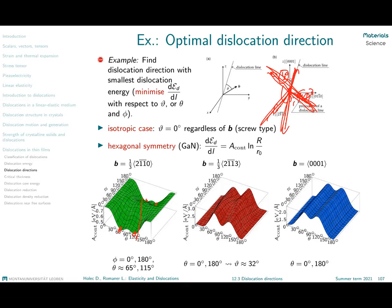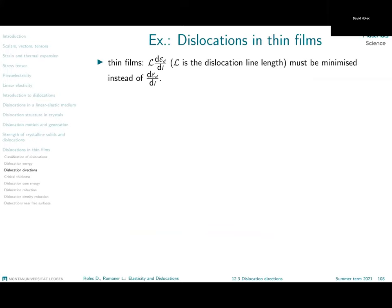The take-home message here is that as soon as more complicated symmetries than elastic isotropic symmetry come into play, things might become more complicated and more involved. But we want to talk about something else than bulk materials — we want to talk about dislocations in thin films.